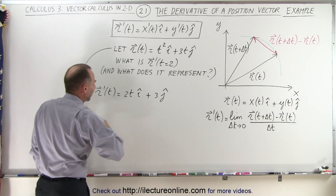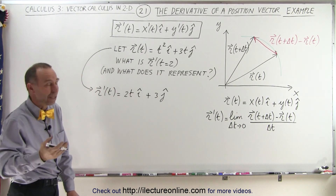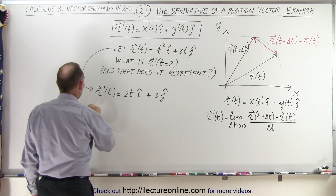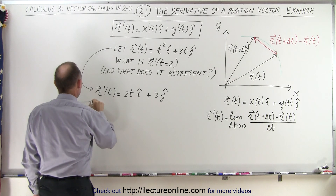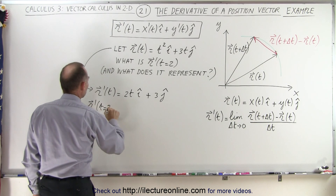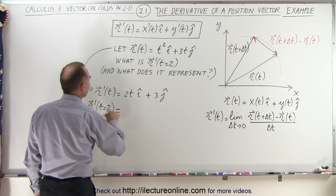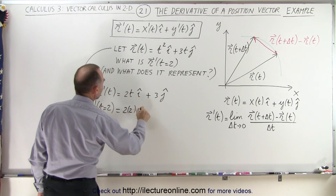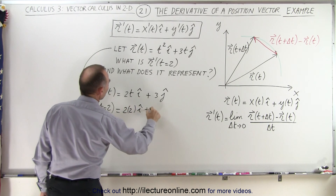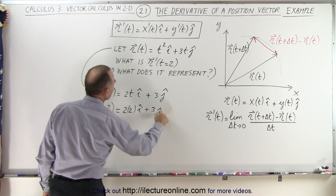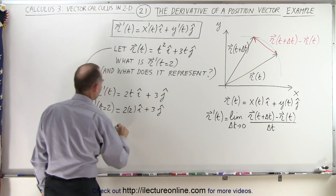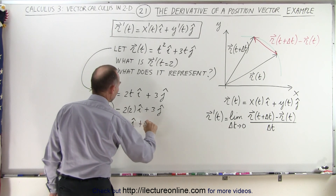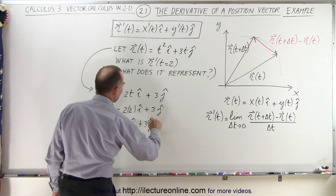t equals 2. Let's assume here that t represents time. So r prime, when t is equal to 2, we plug in 2 for every t. That's 2 times 2 in the i direction plus 3 in the j direction. So this would be 4i plus 3j.